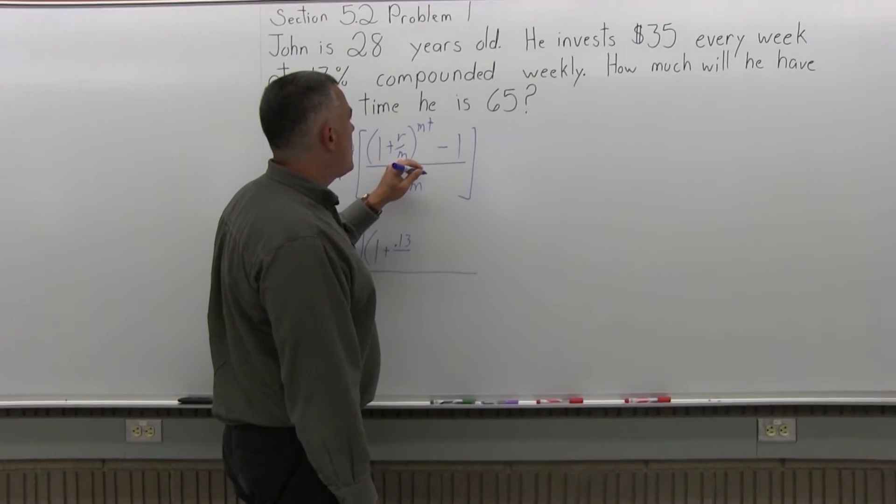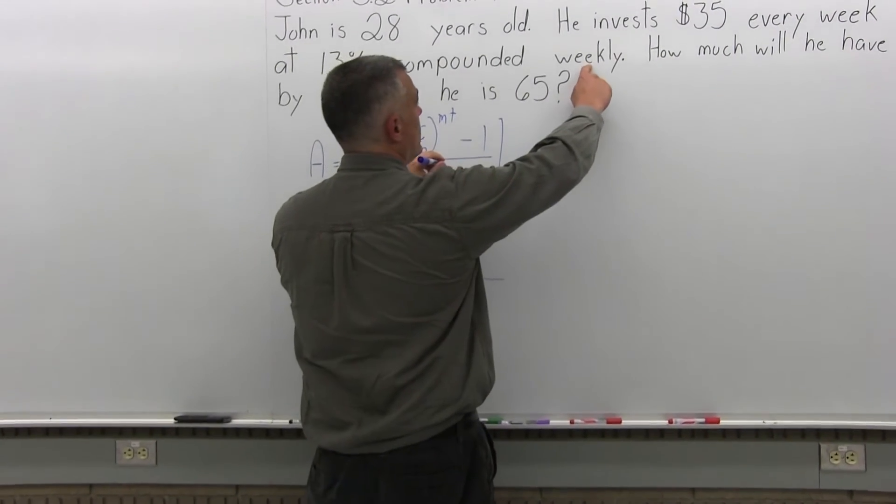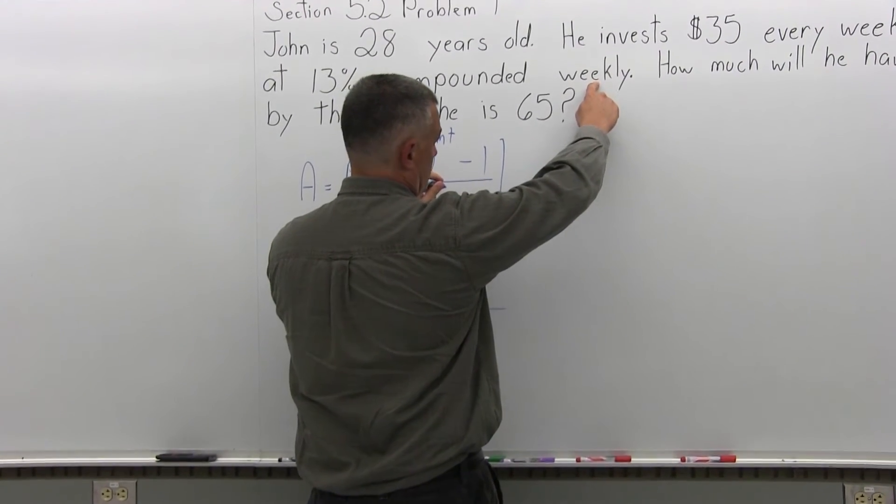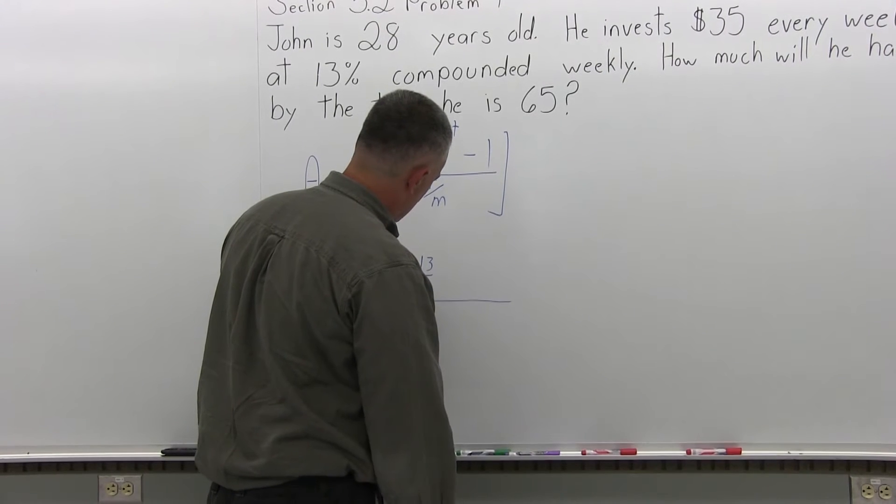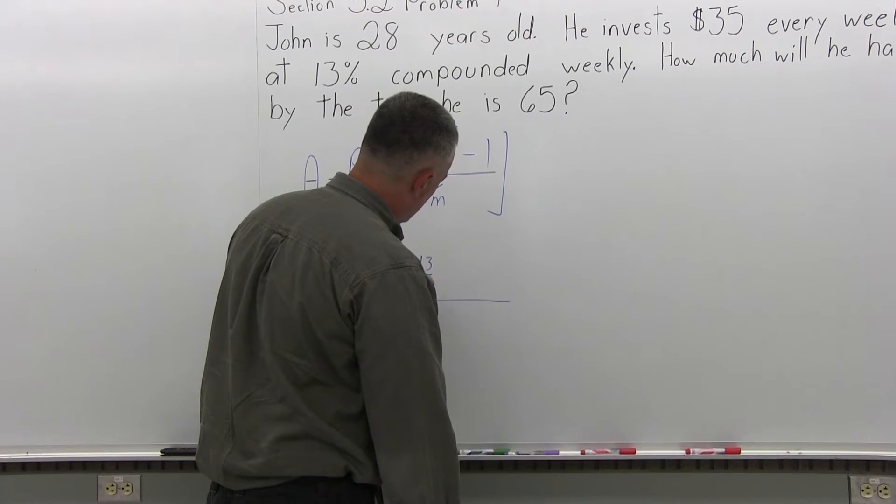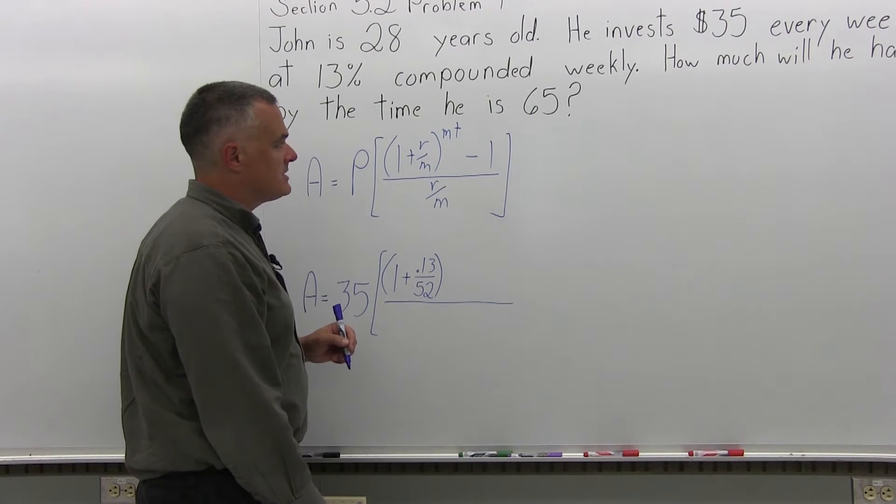m, the number of times compounded per year, now if we're doing weekly compounding, m will be 52, because there are 52 weeks in the year. Close the parentheses, we're going to have an exponent now, m times t.